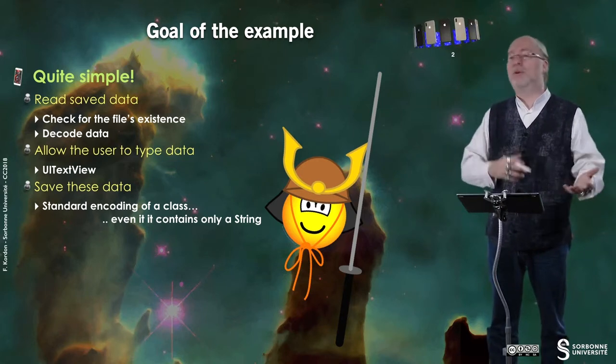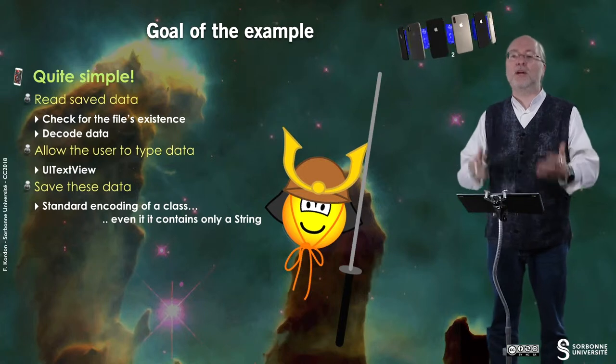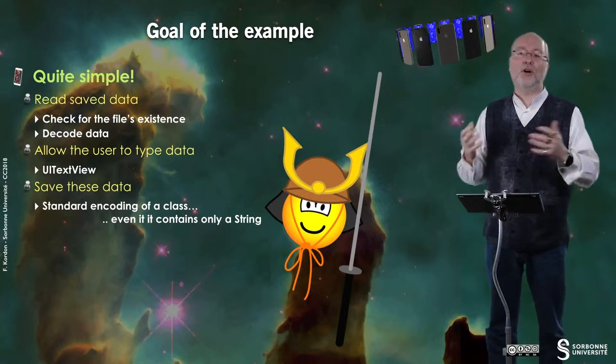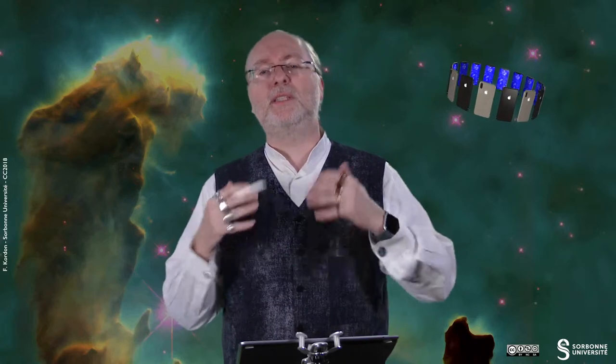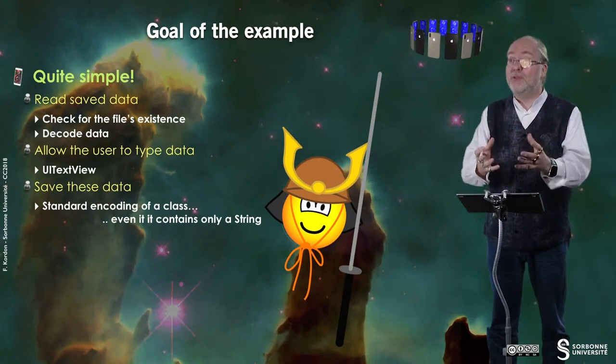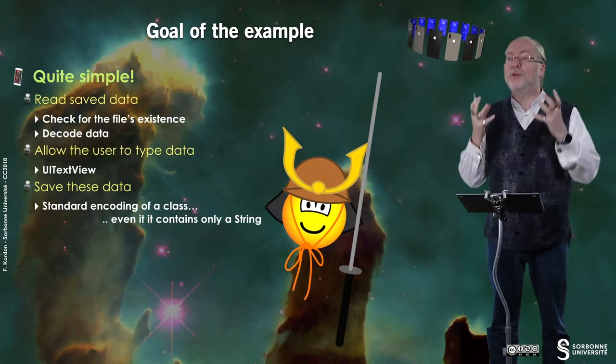You will do this using the standard encoding and decoding of a class. We will have a class that contains only a string. I told you in a previous video that there were dedicated mechanisms for strings, but we will use the standard one for a class — a very simple class. You would never do that for a class with just a string, but it's just to let you see how it works for a regular class with attributes of other classes inside.